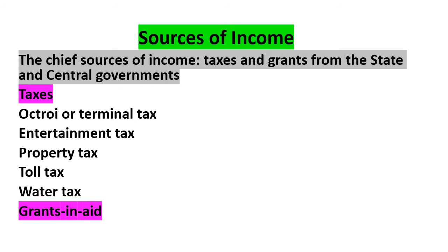Municipal Corporation has to take care of a lot of things, and it definitely needs a lot of money to do so. From where does a Municipal Corporation get all this money? The chief sources of income are taxes and grants from the State and Central Governments. Corporations can collect taxes such as Octroi or Terminal Tax, Entertainment Tax, Property Tax, Toll Tax, and Water Tax. In addition, corporations receive grants-in-aid from the State and Central Governments.